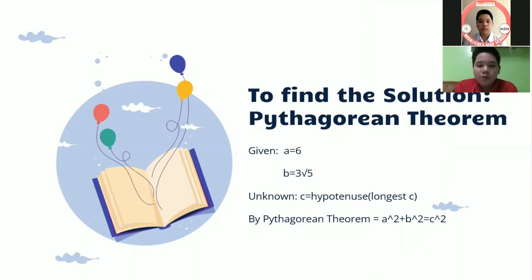First, we need to identify the given which is a equals 6 and b equals 3 square root of 5. The unknown value in this problem is the hypotenuse or the longest side of the right triangle.